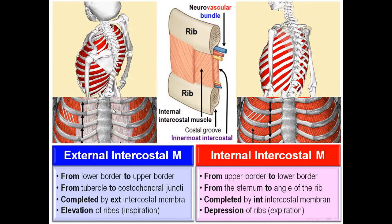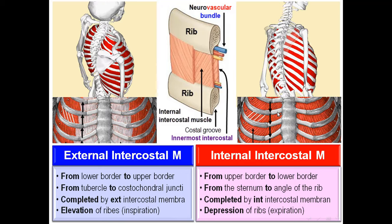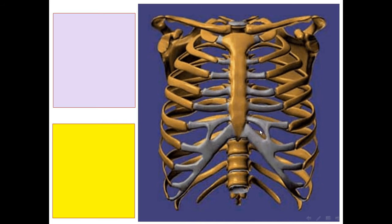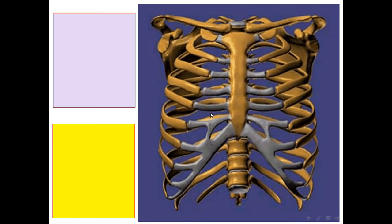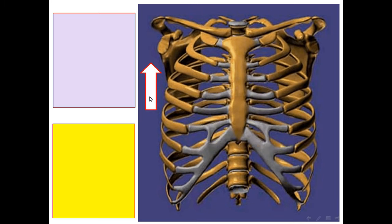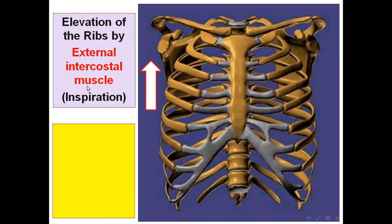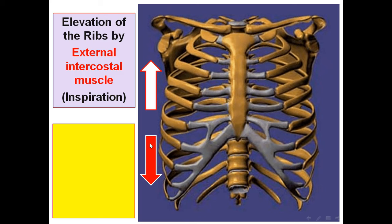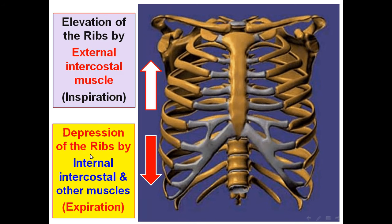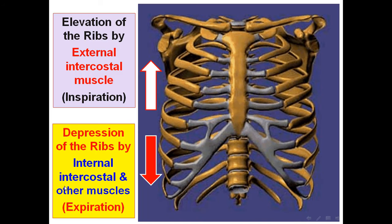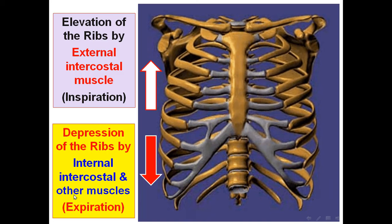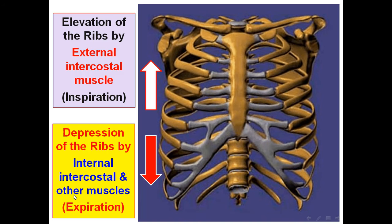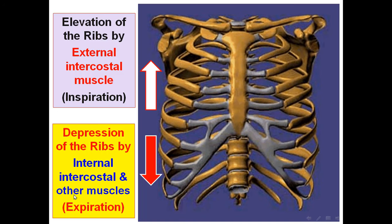The external intercostal elevates the ribs and is therefore the muscle of inspiration. The internal intercostal depresses the ribs and is the muscle of expiration. Depression of the ribs is also performed by the other intercostal muscles: internal intercostal, innermost intercostal, sternocostalis, and subcostalis. So the muscle of inspiration is the external intercostal, and muscles of expiration are the internal intercostal, innermost intercostal, sternocostalis, and subcostalis.